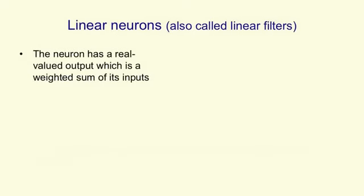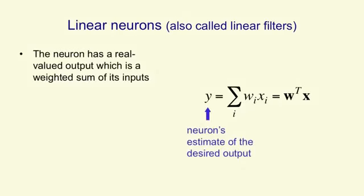Linear neurons, which are also called linear filters in electrical engineering, have a real valued output that's simply the weighted sum of their inputs. So the output y, which is the neuron's estimate of the target value, is a sum over all their inputs i of a weight vector times an input vector. So we can write it in summation form or we can write it in vector notation.